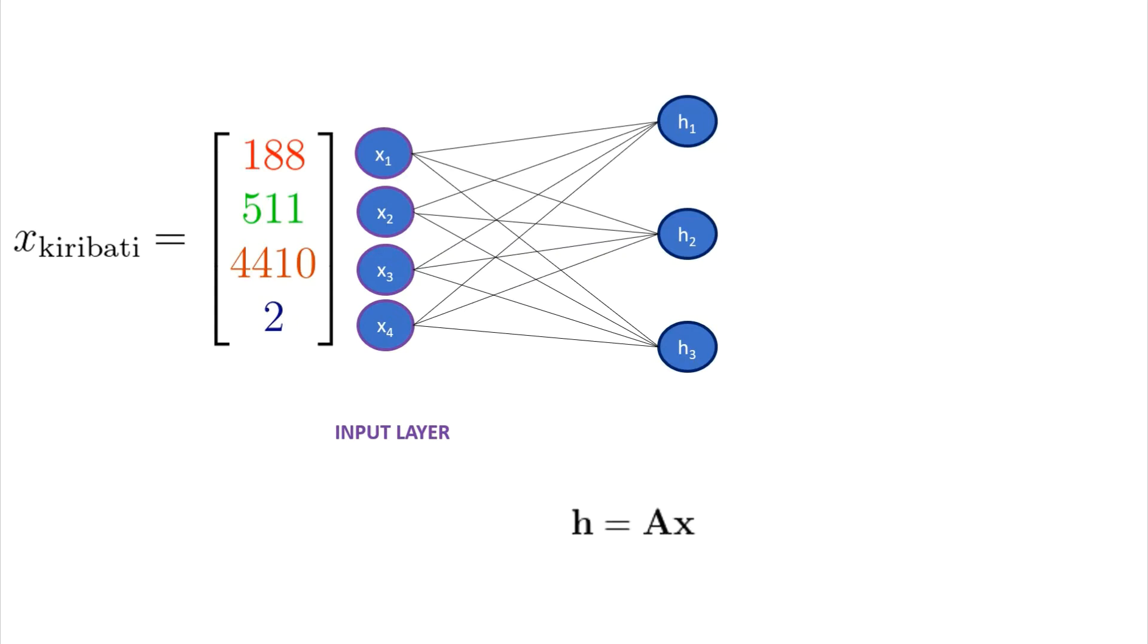However, in reality, H is equal to a function of AX, where the function is a non-linearity known as an activation function. Typical common examples of activation functions are the ReLU, a rectified linear unit, and the hyperbolic TAN function. Each activation function has its own advantages and they are often chosen carefully for the task at hand. We will denote the specific activation function used here as F1.